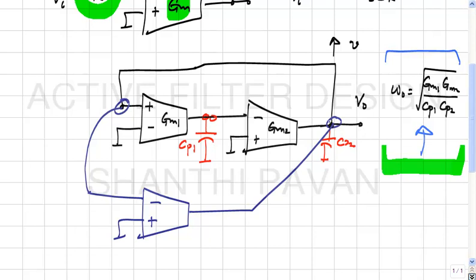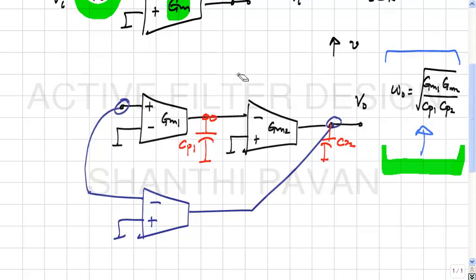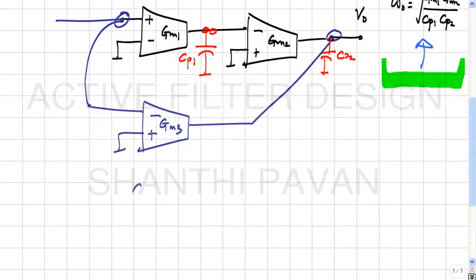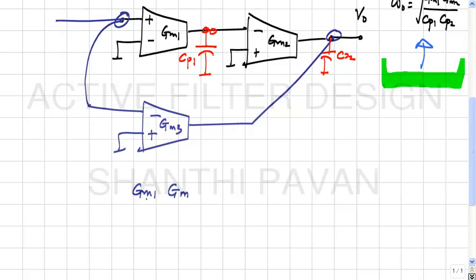With this structure, the effective GM is GM1·GM2/(S·Cp1·(GM1 + GM2 + GM3)). The loop gain is this composite GM times 1/(S·Cp2).